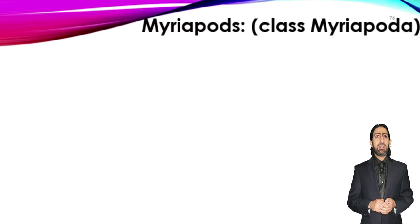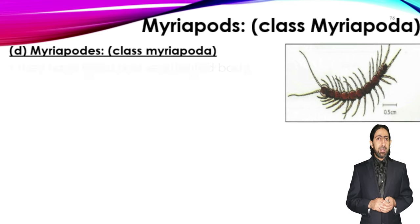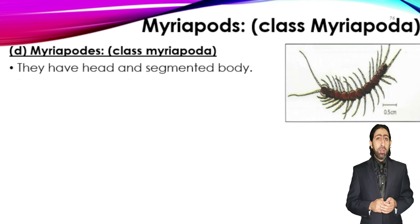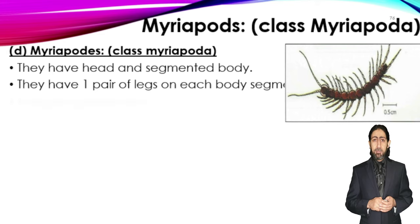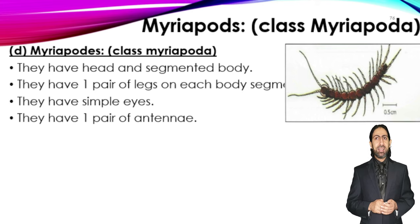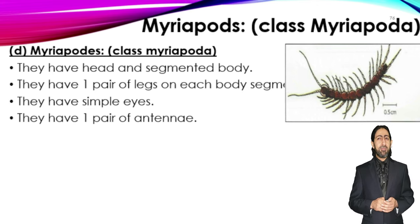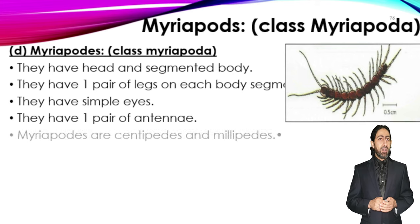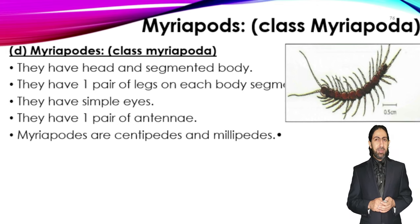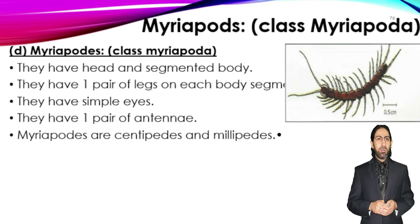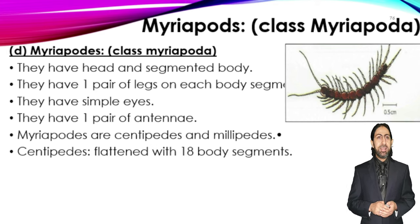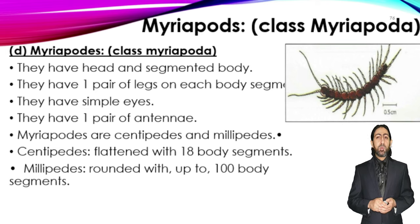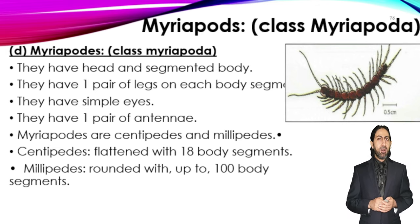Class Myriapoda includes centipedes and millipedes. They have a head and segmented body, one pair of legs on each body segment, simple eyes, and one pair of antennae. Centipedes — 'centi' means 100 — have up to 100 segments and are flattened, mostly with 18 body segments. Millipedes — 'milli' means 1000 — have more than 100 and up to 1000 body segments and are rounded, with two pairs of legs on each segment in some cases.